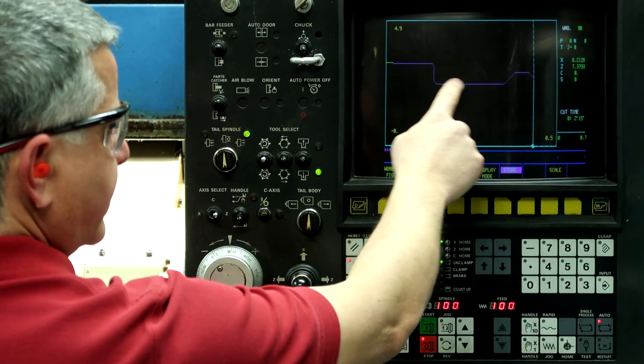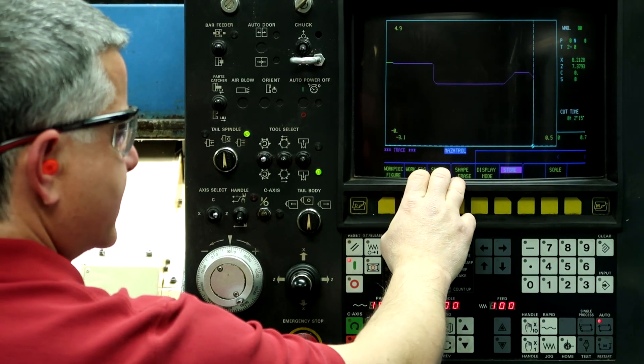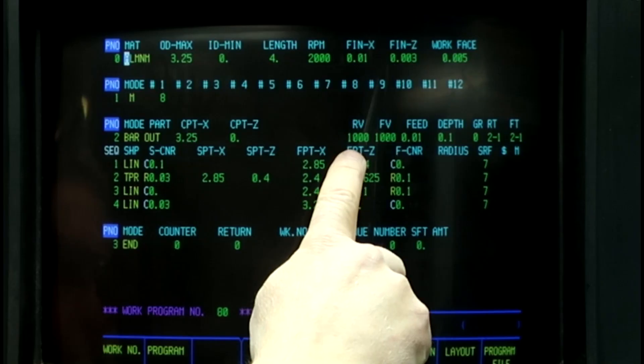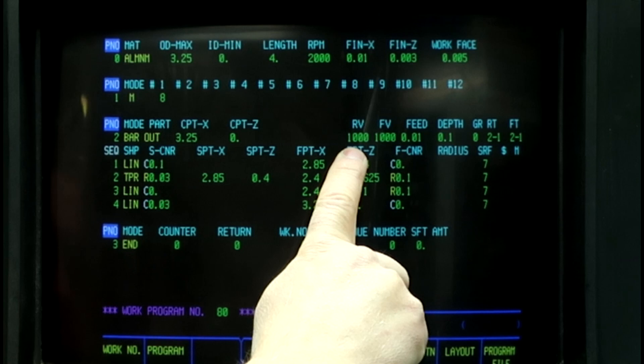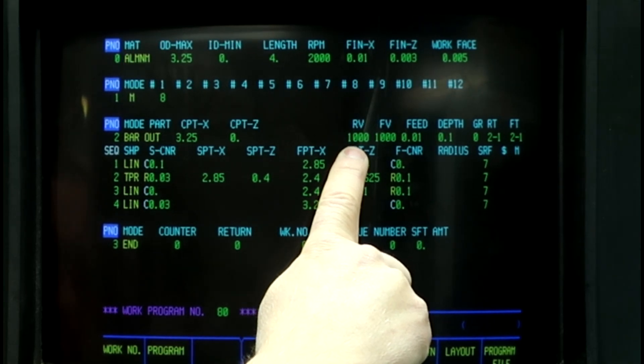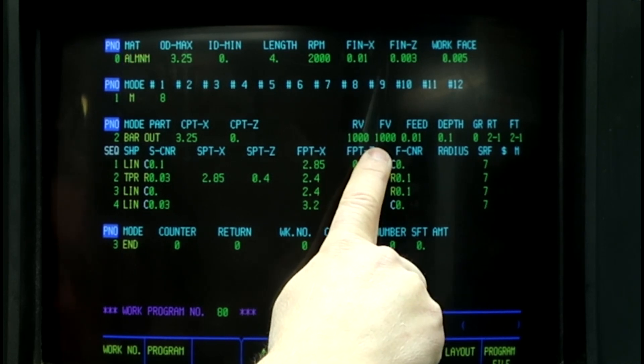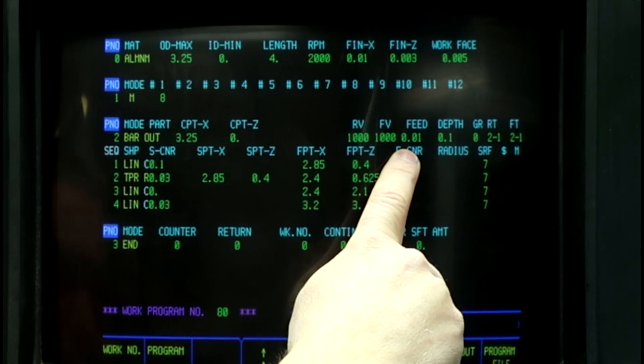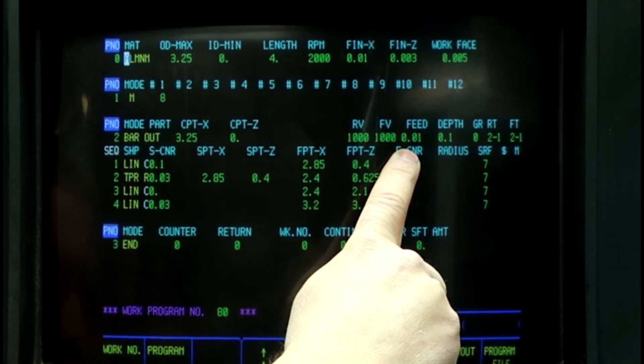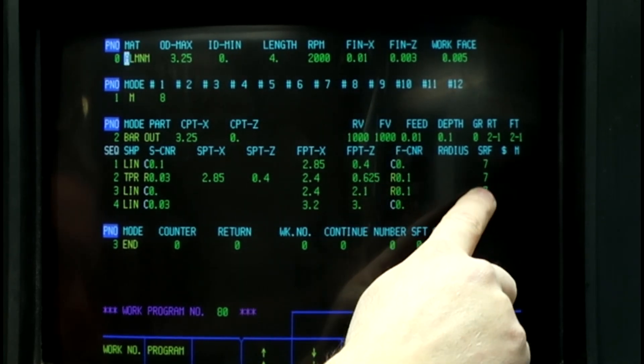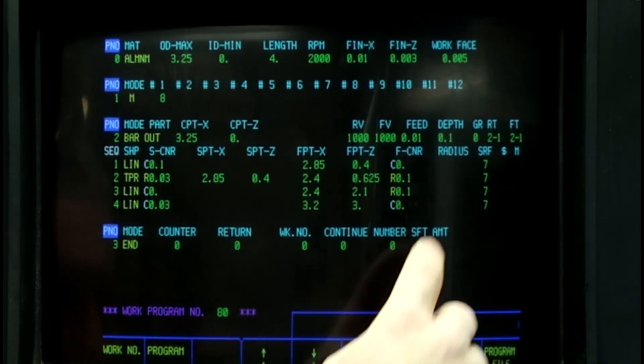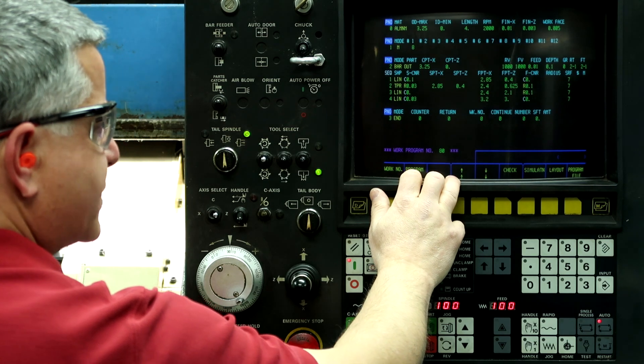So what we're going to do is we're going to run this toolpath process. And I have in the speeds and feeds right now, 1,000 surface feet per minute on roughing velocity, 1,000 surface feet per minute on finish velocity, 10,000th per revolution on the feed rate, and a surface finish of number 7.